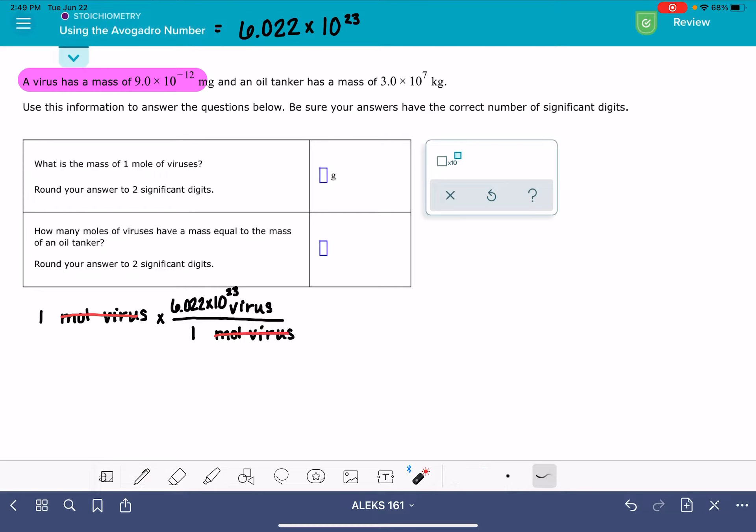The next thing that we're going to do is use the mass of an individual virus that's given to us in the problem. The problem is telling us that every virus, so if we have one virus, it has a mass of 9.0 times 10 to the negative 12, and those units are milligrams. So in this step, we're canceling out the virus unit, and we're going to be left with units of milligrams.